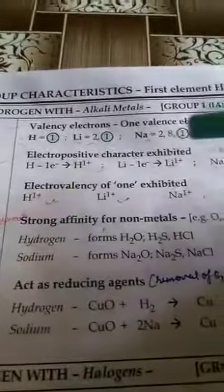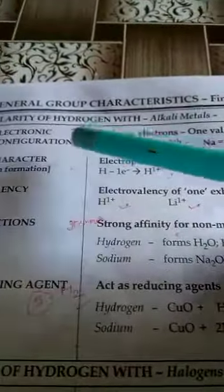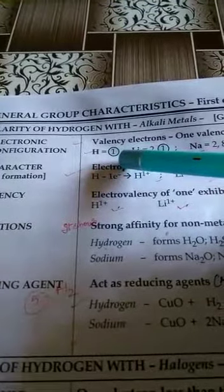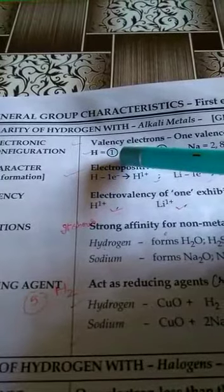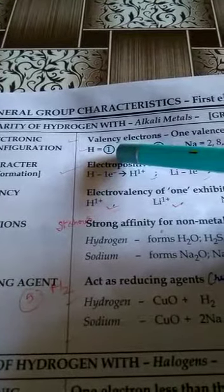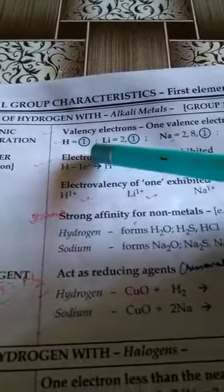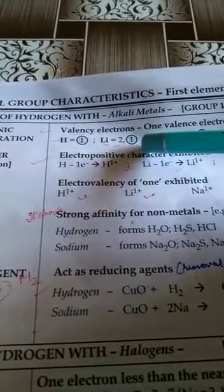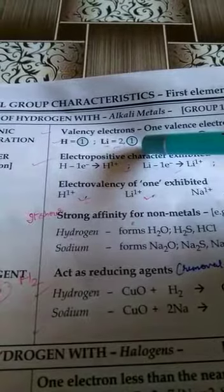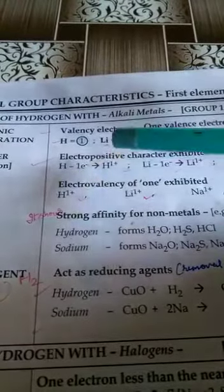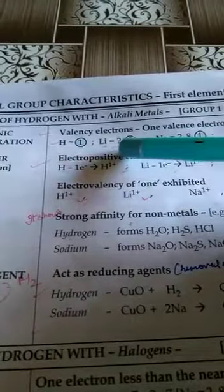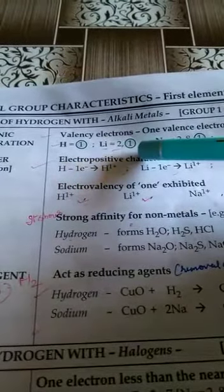So let us first see the electronic configuration of hydrogen. Atomic number of hydrogen is 1, so electronic configuration of hydrogen is also 1. Let us see the electronic configuration of alkali metals that are kept in group 1. So first is lithium. Its atomic number is 3, so electronic configuration will become 2, 1.